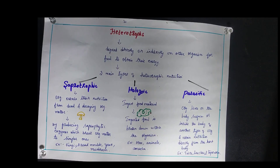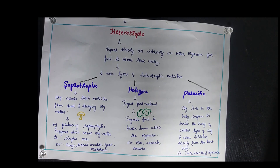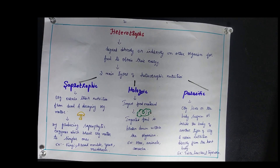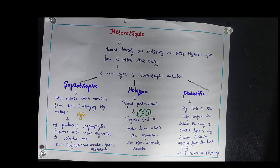The next mode of nutrition is about heterotrophs. These organisms either depend directly or indirectly on other organisms for food to obtain their energy. These organisms are classified into three types: saprotrophic, holozoic, and parasitic.